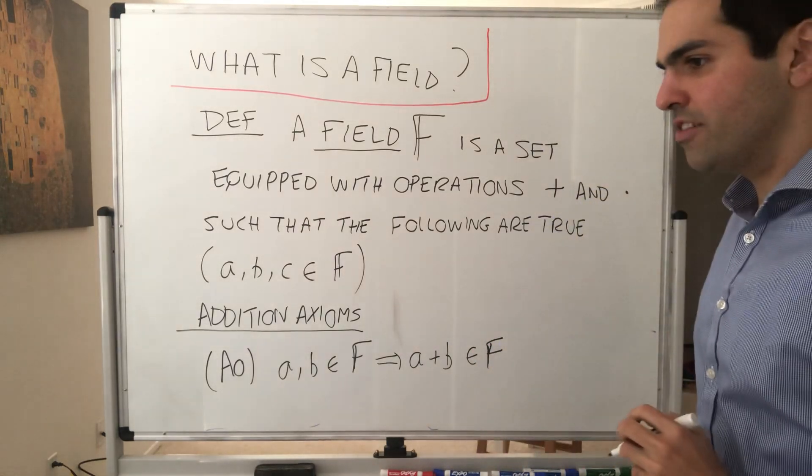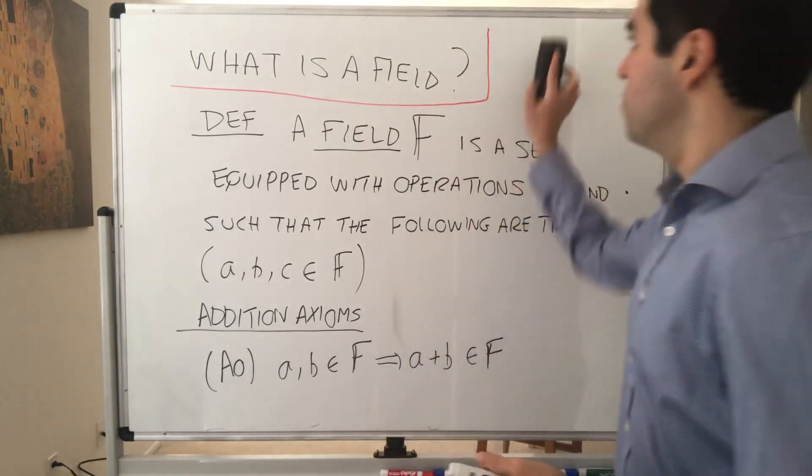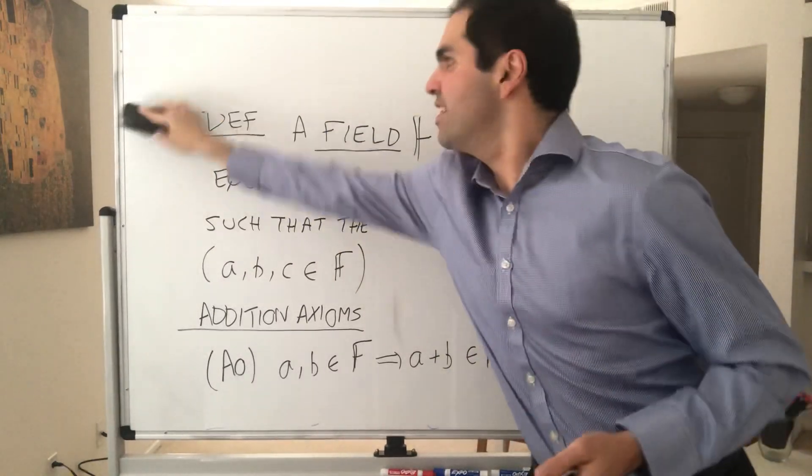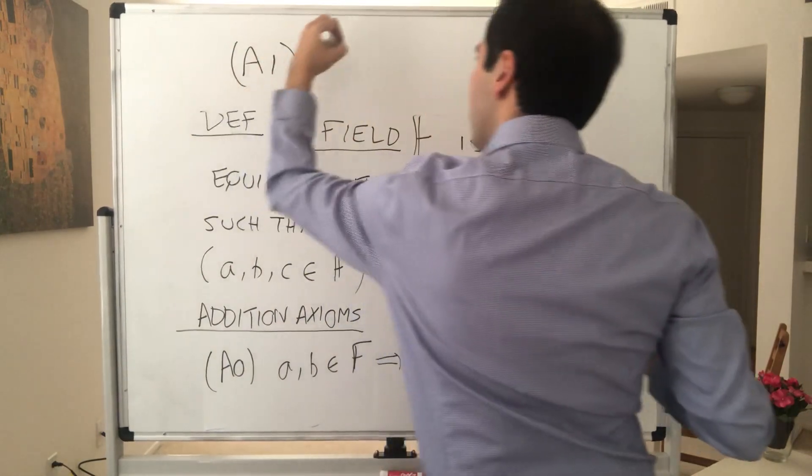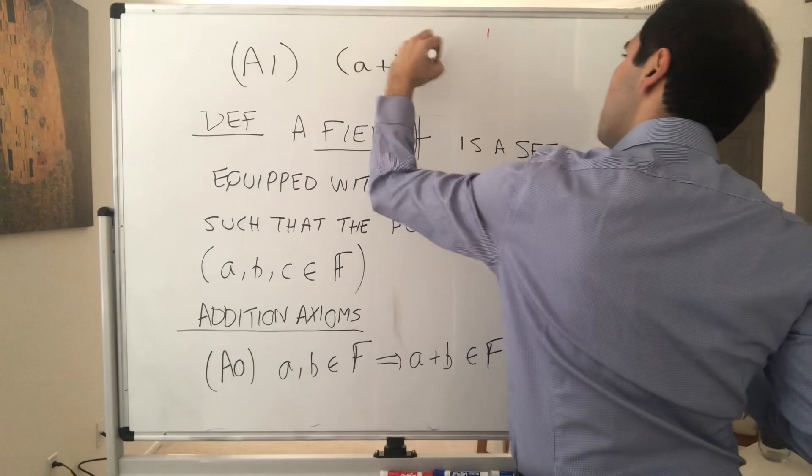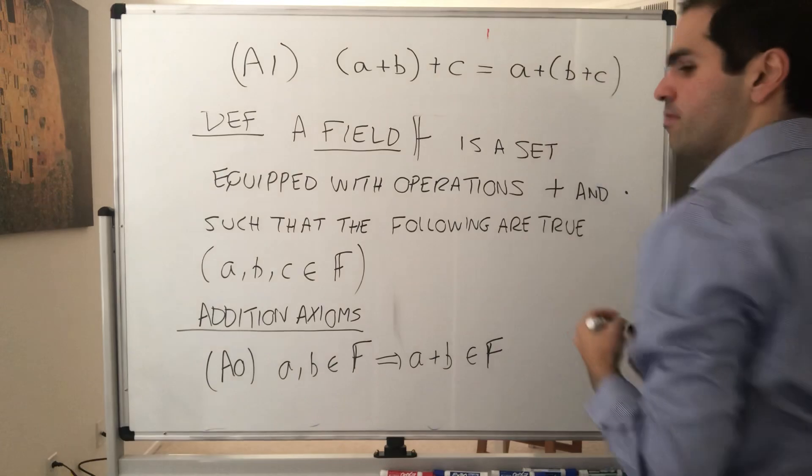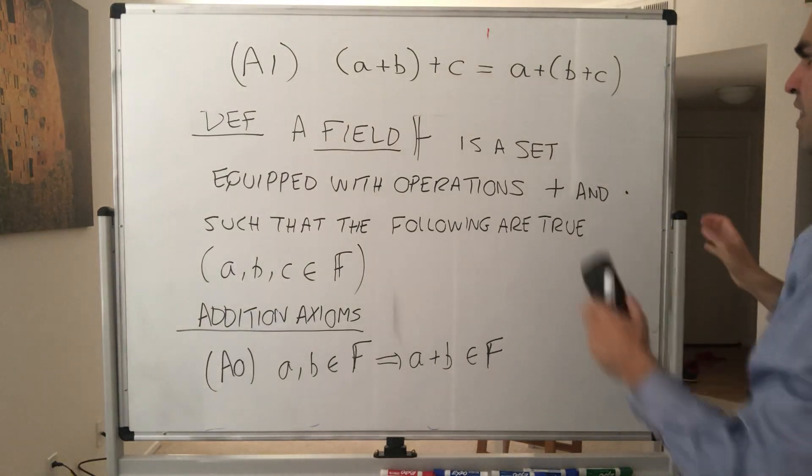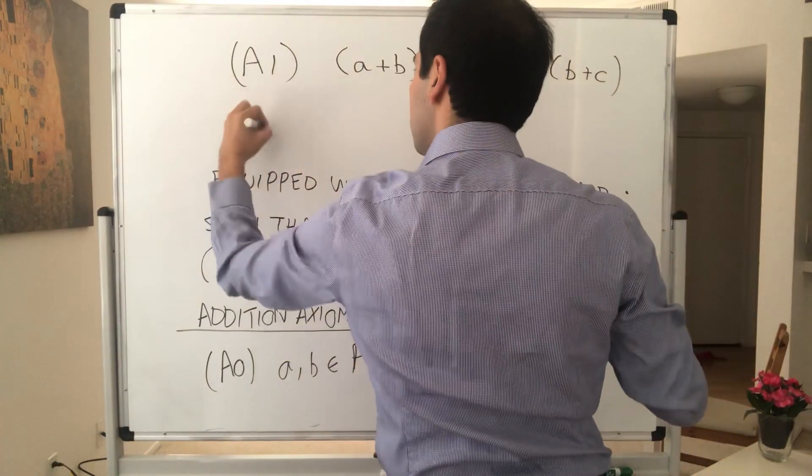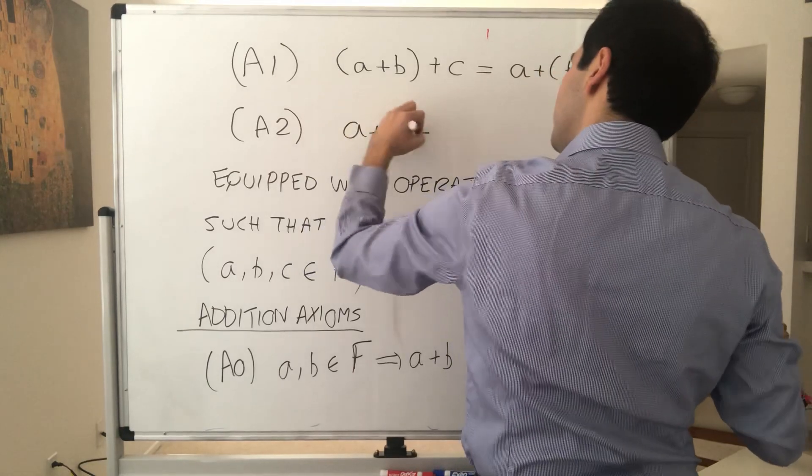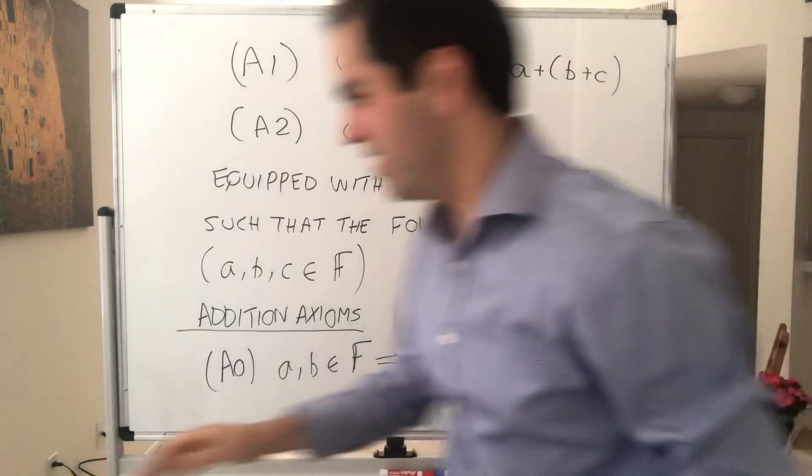Just like for vector spaces, if you want. Then the next one, it's called associativity, which basically means parentheses don't matter. So all this means is a plus (b plus c) equals (a plus b) plus c. And then there's commutativity, which just means a plus b equals b plus a. So the order of operations in some sense doesn't matter.